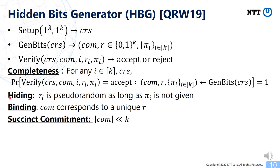The hiding property says that R_i is pseudorandom as long as the proof pi_i is not given to the adversary. The binding property roughly says that the commitment corresponds to a unique R — more precisely, for any fixed commitment there exists a unique corresponding R such that any polynomial-time adversary can generate a proof pi only for the corresponding bits of that R. The fourth property is the succinct commitment property, meaning the length of the commitment is much smaller than the hidden bit length K, so the underlying PRG is sufficiently length-increasing.